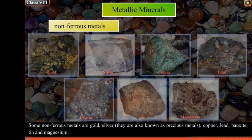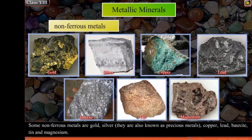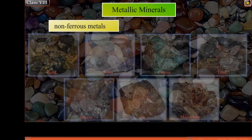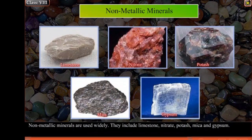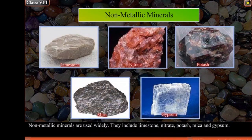Some non-ferrous metals are gold and silver, which are also known as precious metals, as well as copper, lead, bauxite, tin and magnesium. Non-metallic minerals are used widely. They include limestone, nitrate, potash, mica and gypsum.